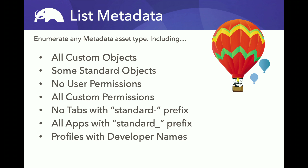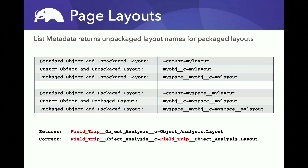But there's one object that list metadata really handles in a strange manner, and that's page layouts. Page layouts are pretty complex — they can be for standard objects, custom objects, or packaged objects. So if you had a layout called 'my layout', you could put it on an account object, a custom object, or an object from a managed package with a namespace prefix. Those are unpackaged layouts. But layouts can also be in managed packages. So if a managed package adds a layout to the account object, it looks like: account, myspace underscore layout — where myspace is the namespace of the package. This is really weird because this is the only managed object where the prefix is not a prefix — it's in the middle. It's the only object that does this in the entire metadata API.